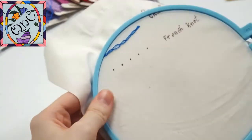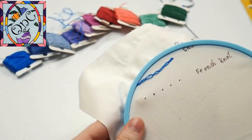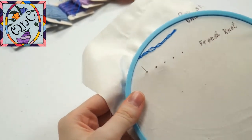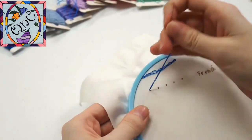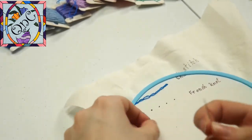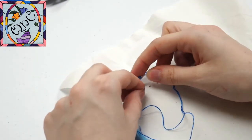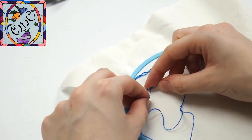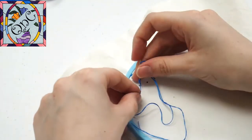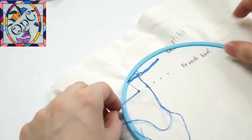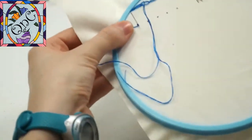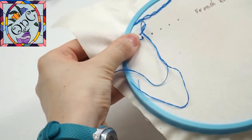Okay, so for our French knot, I'm going to come up on the little dot I made for myself, and then I'm going to loop around my needle a couple times, depending on how big you want your knot, put it back down, pull it tight, and then pull my needle through.